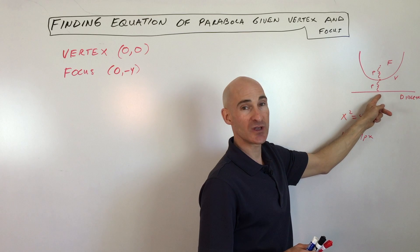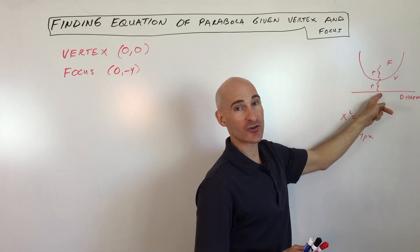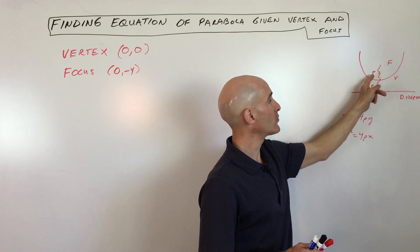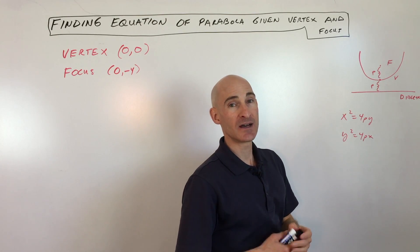Now the vertex is halfway in between the focus and the directrix, and the distance from the vertex to the directrix or the vertex to the focus we usually call that distance P.